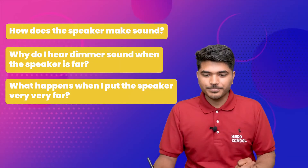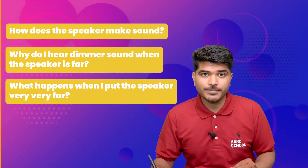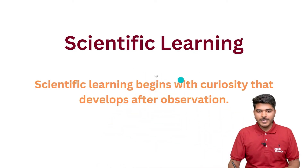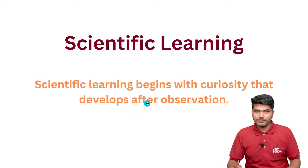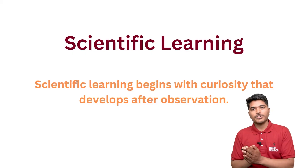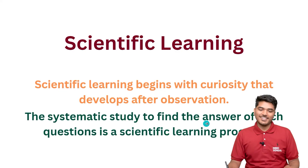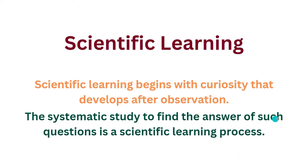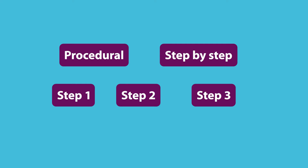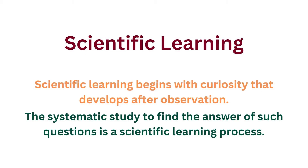So what is the proper way to answer these questions, or investigate them scientifically? These kind of methods fall under the scientific learning method. Scientific learning method begins with curiosity that develops after observation — you saw something, you are interested in it, you asked a proper question. The systematic study to find the answer to such questions is the scientific learning process. Systematic means procedural — it is something step by step. You follow one step, then the next, and this is how you find the answer.